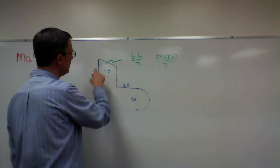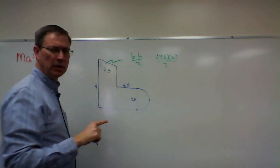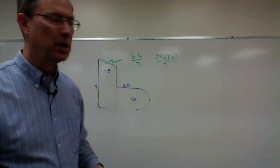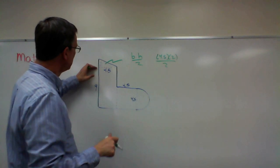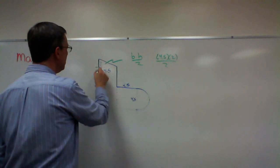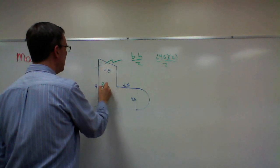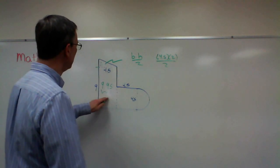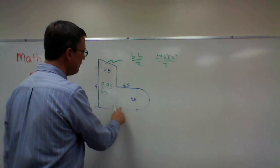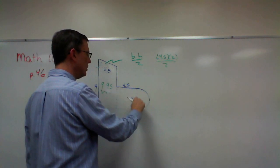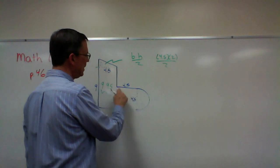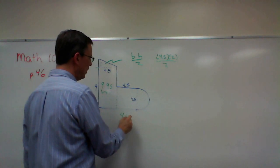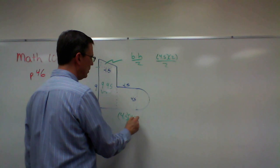Now what is this height right here? The 9 does not go all the way up — the 9 stops right here. So this area is just 9 times 4.5 and you can calculate that with your calculator. That's a rectangle — that part's easy. We have another rectangle right here. This entire height is 4.5 and this length is 4.5, so this is a square. We're going to do 4.5 times 4.5.